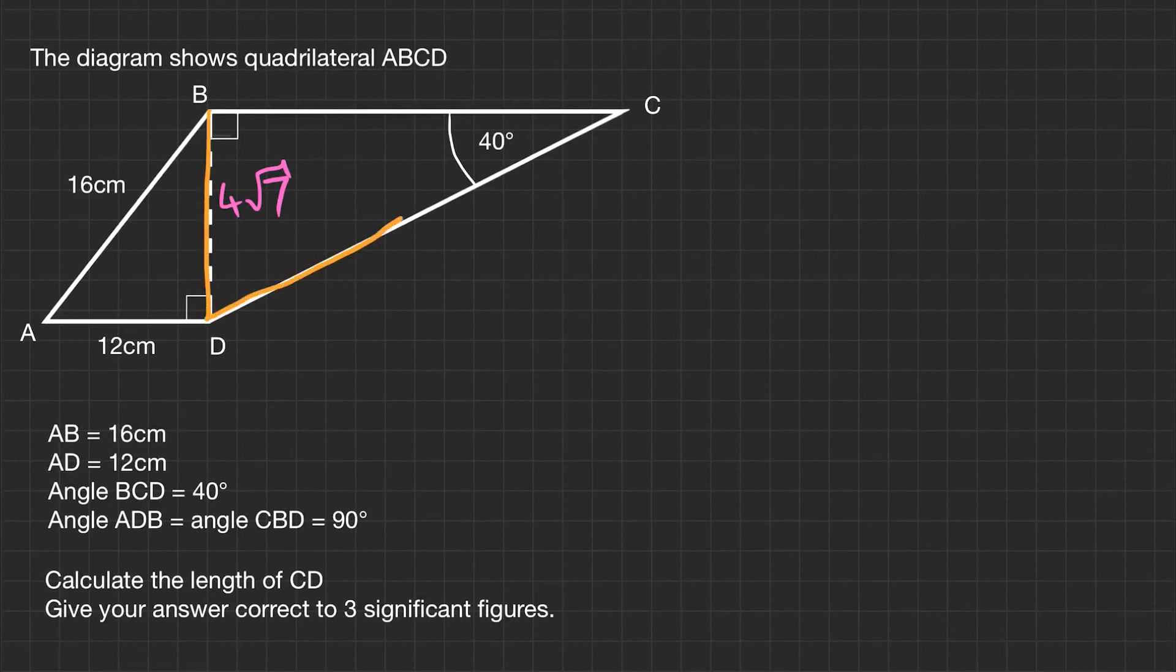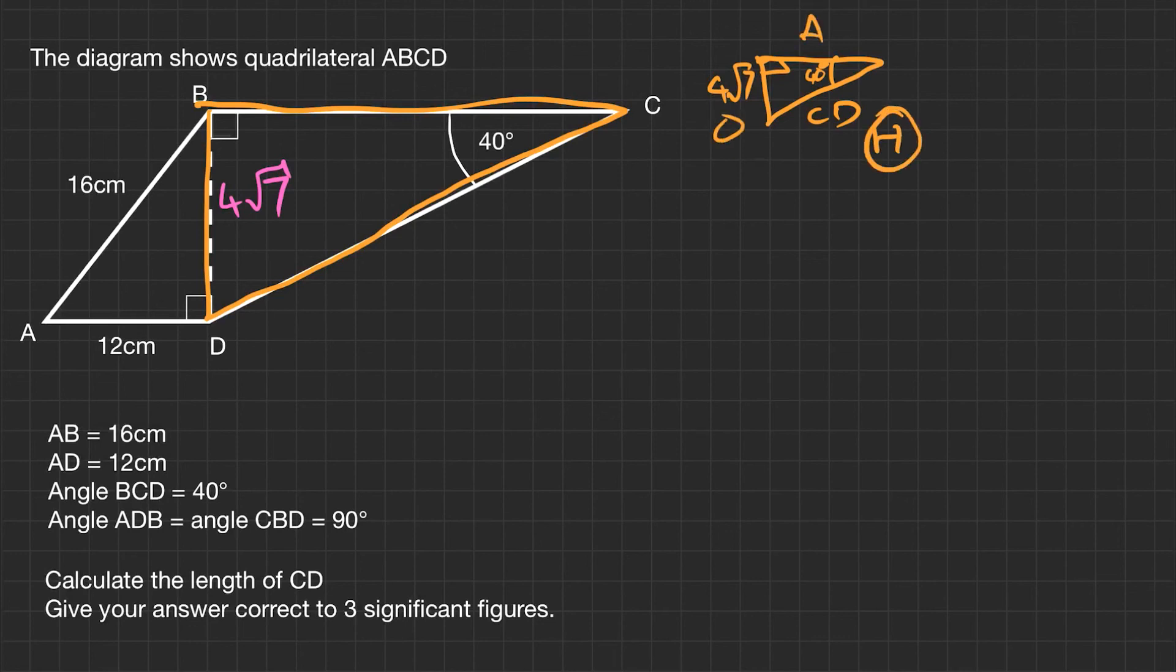We've now got a second triangle we want to work with. It's this one here. So I'm just going to redraw it with a little right angle, 4 root 7, an angle of 40 degrees. And we want to find this side, which I'm going to call CD. Now firstly, we want to label each side. So we've got the hypotenuse, the opposite, and the adjacent. And we need the hypotenuse and the opposite.